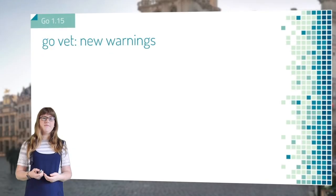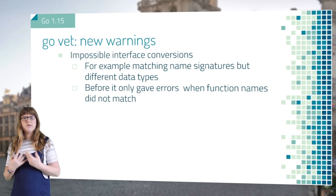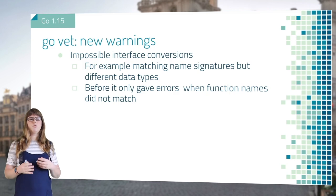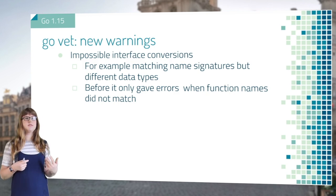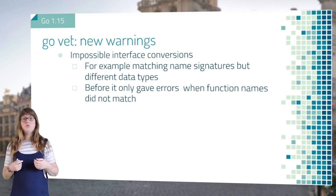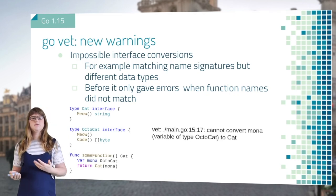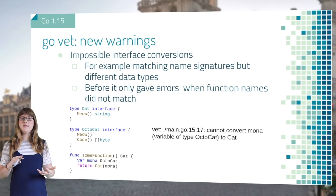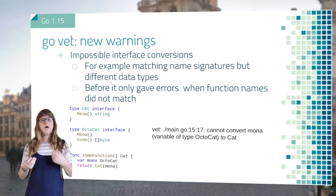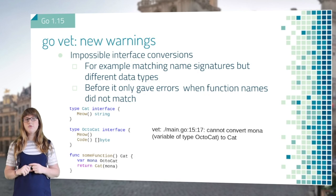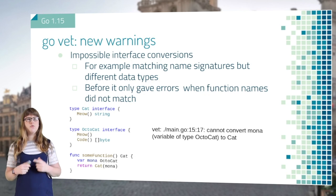Another new warning in Go 1.15 is that it will warn you against impossible interface conversions. It already did this, but it didn't catch everything — for example, when two interfaces had the same method name signature but different return data types, it would not error. Here we have two interfaces: a cat and an octocat. Both cats can meow, but only one can code. When we now want to convert our octocat to a cat, GoVet will give a warning because the cat interface returns a string where the octocat does not. Previously, only the compiler would have warned against this.